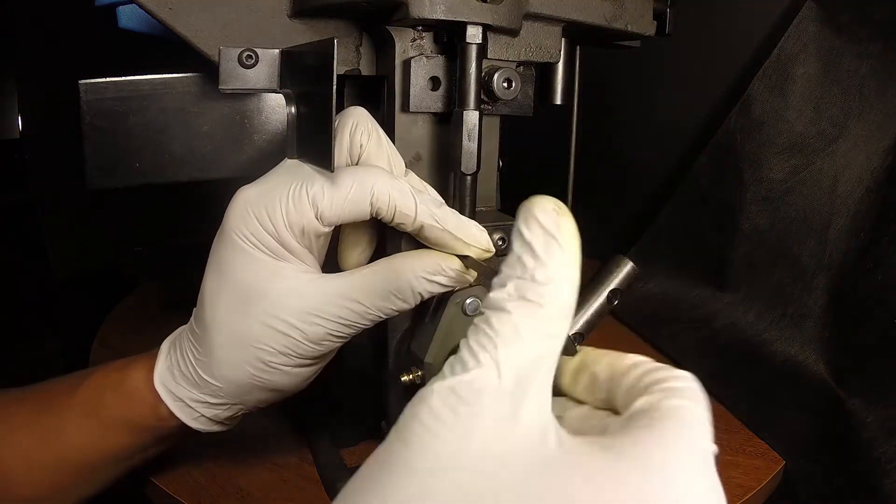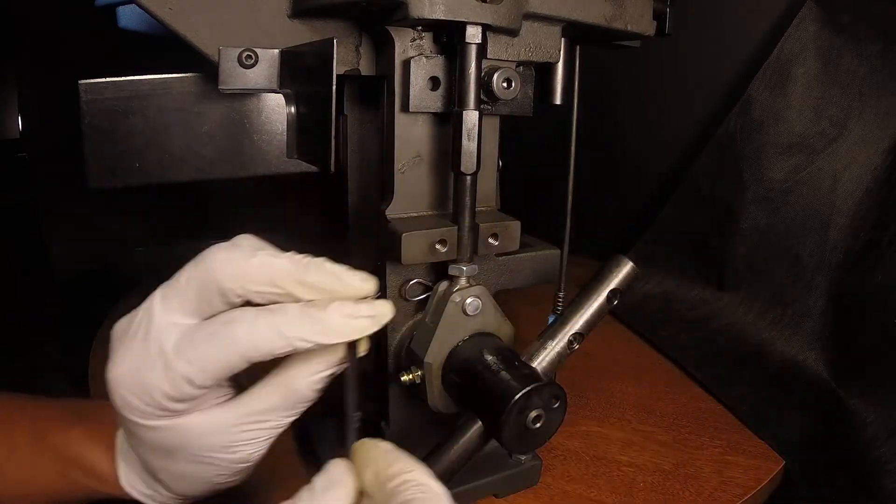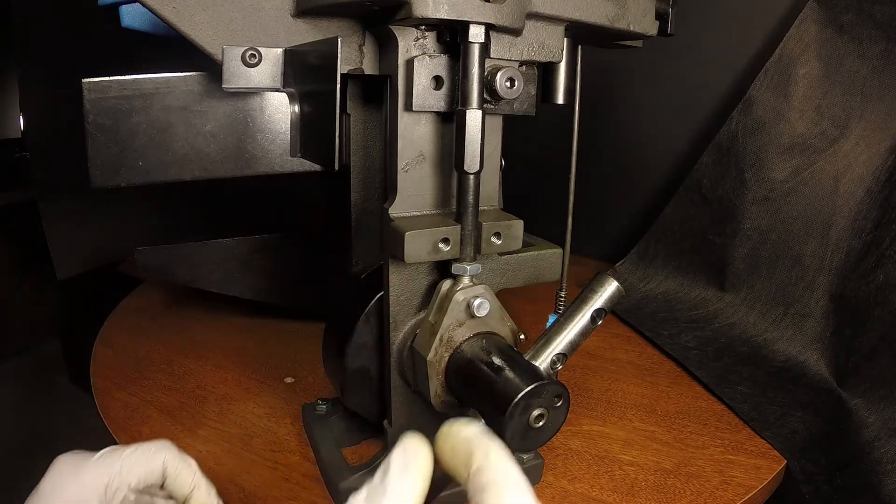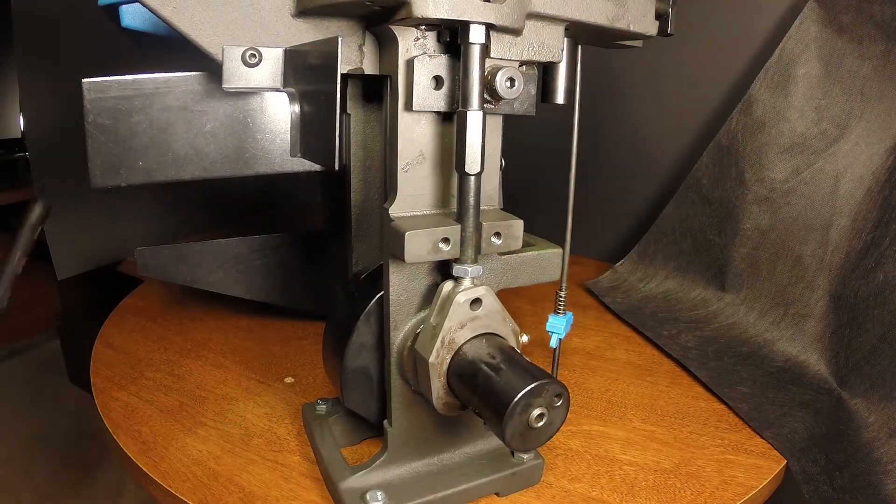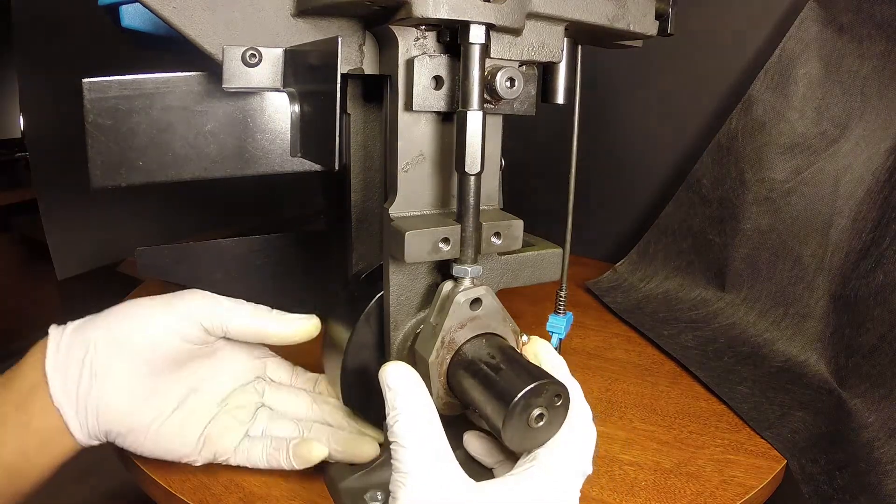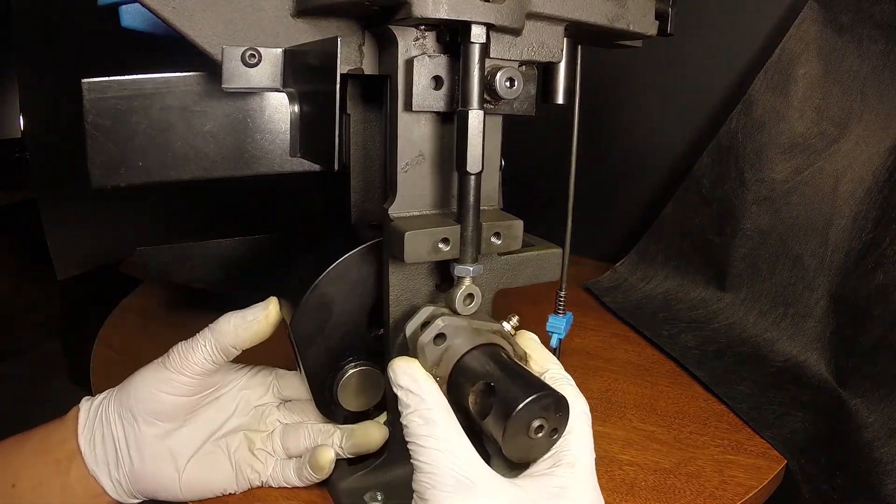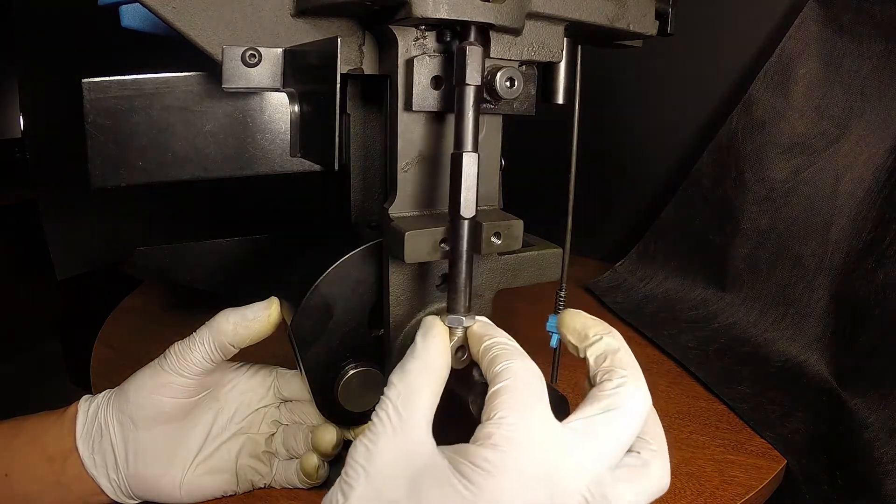To access the swage assembly, remove the swage cover. Next use the hitch pin and slide out the clevis pin. Remove the operating handle. Rotate the swage connecting rod a half turn to remove it. Lift the link arm to create more room and remove the swager.